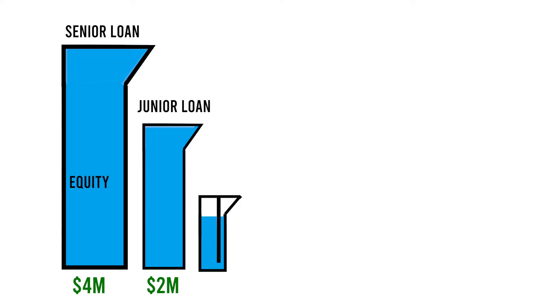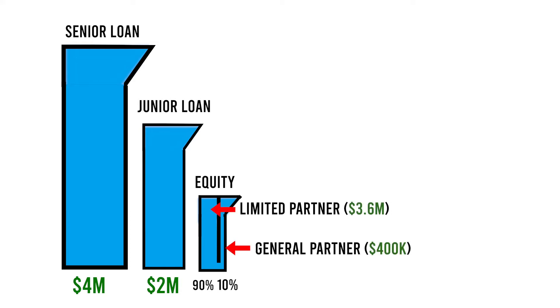The water now spills over to the equity, which has a funny looking container because it's split 90-10. One common structure is to pay the LP and the GP principal back pari-passu, or at the same time. So for every dollar of equity paid back at this point, 90 cents goes to the LP and 10 cents goes to the GP. At this point, everyone's got their original contributions back — the bank is happy, and they're out of the picture.